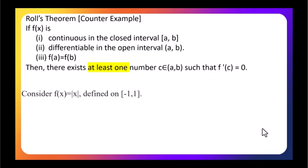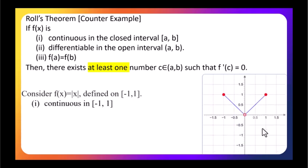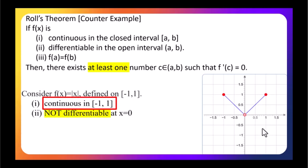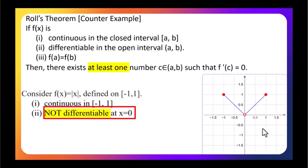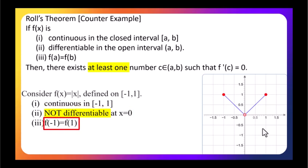The second counter-example: consider f(x) equals the absolute value function. The function is continuous on the interval [-1, 1], but the function is not differentiable at x equals 0 because x equals 0 is a corner point, and at such a point the function is not differentiable. The third condition is also true, but because the second condition fails, Rolle's theorem does not apply in this example.